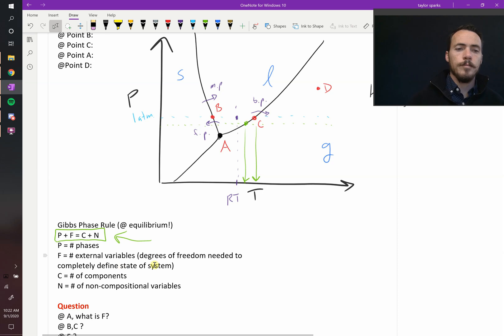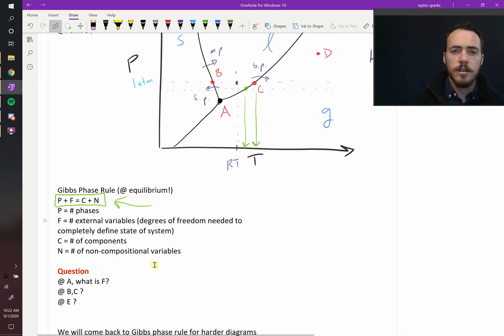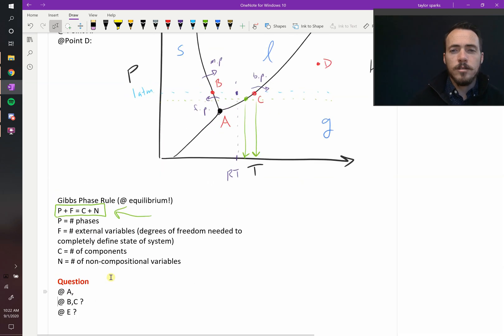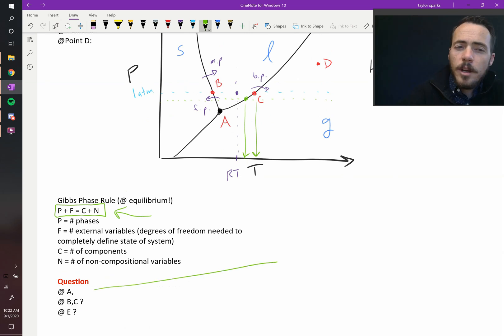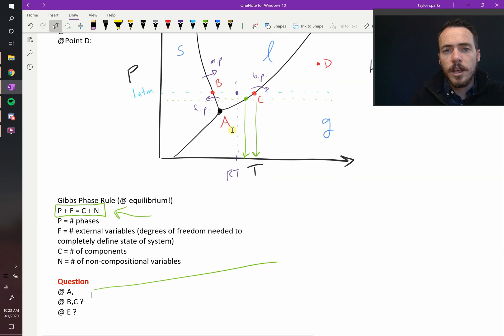Let's do an example. At point A, how many degrees of freedom are possible is the type of question you could ask. At point A, we could apply this. So let's do Gibbs phase rule at point A. At point A, how many phases are present? Well, we said it's a triple point. Your solid, liquid, and gas, since they're all touching that point, they're all in equilibrium with one another. So it's going to be three plus F equals C plus N.